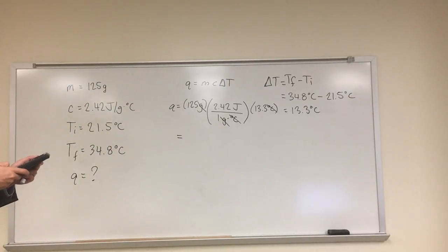So we're going to multiply what we have: 13.3 times 2.42, and multiply that number by 125. So the calculator gives us 4,023.25. But if you look,